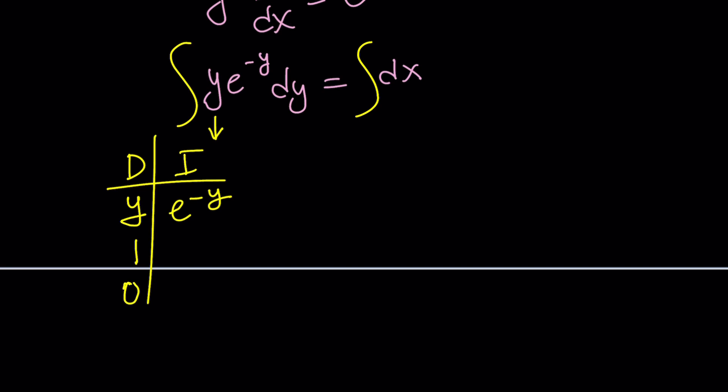And integrating e to the power of negative y with respect to y is not too hard. So let's differentiate y until we get to zero. Nice. And let's integrate e to the power of negative y. Again, this is not with respect to x, with respect to y. Notice that we have a dy here. So you're going to get negative e to the negative y from the derivative of negative one. Negative y. And one more time, it's going to disappear. Makes the negative disappear.